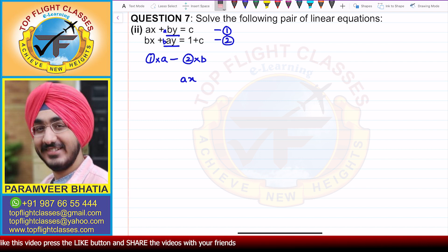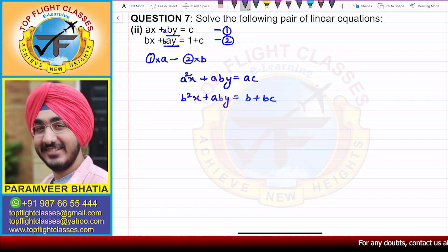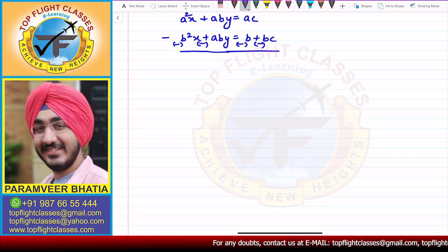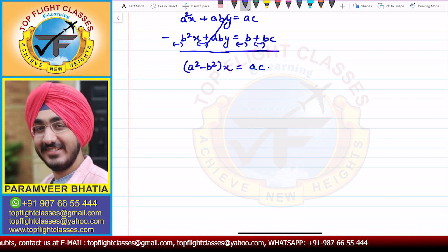From the first multiplication I will get a-squared x plus a·by equal to ac, and from the other one I will get b-squared x plus a·by equal to b plus bc. On subtraction, the signs will change. What you get is a-squared minus b-squared times x, and a·by gets cancelled. From the right side I get ac minus b minus bc.